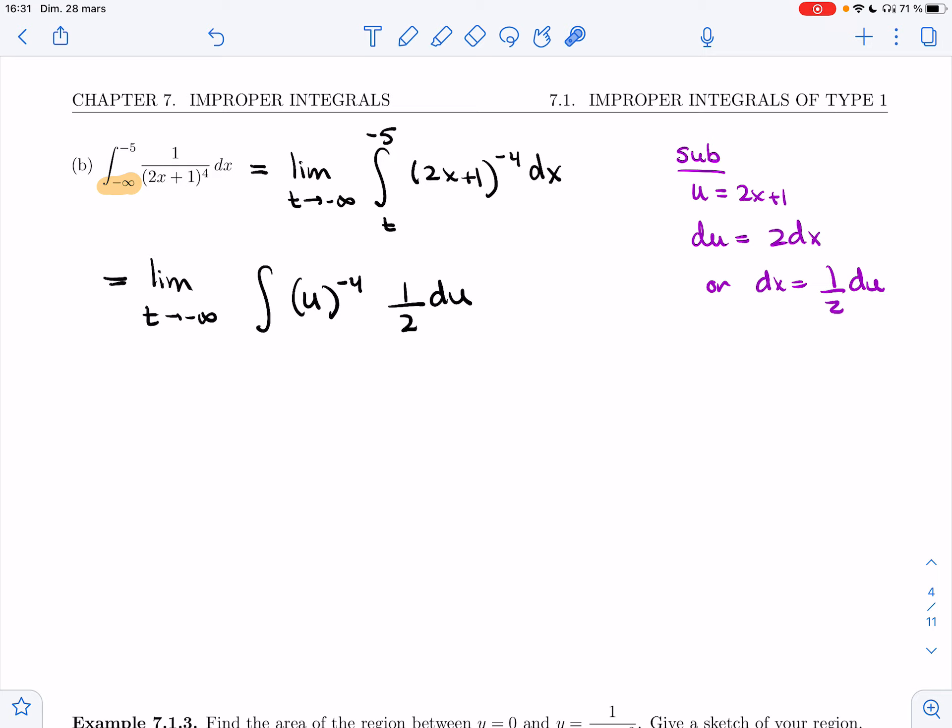And then I have to worry about the bounds. Remember, when you change variable, you change your bounds. So I have t, that's a bound for x. I'm going to plug it into this to get a bound for u. So here I'll get 2t plus 1. For minus 5, I get 2 times minus 5 plus 1. All right, now I can integrate.